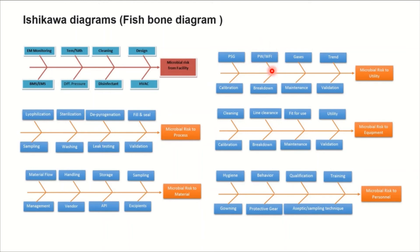For purified water (PW) and WFI: in solid oral dosage, PW is the water source for processing; for injectable processes, the final rinse should be WFI to minimize introduction of bioburden into the product, and your formulation solution should also be WFI. Steam quality is an important factor — steam is utilized for SIP of your vessels, lyophilizer chamber, and in the sterilizer.